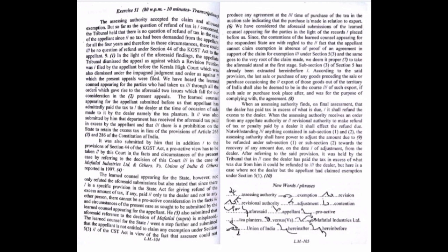The learned counsel appearing for the appellant submitted before us that appellant has admittedly paid the tax to the dealer at the time of occasion of sale made to it by the dealer, namely the tea planters. It was also submitted by him that department has received the aforesaid tax paid in excess by the appellant and that there is a prohibition on the state to retain the excess tax in lieu of the provision of Article 265 and 286 of the Constitution of India.